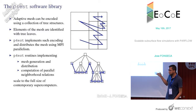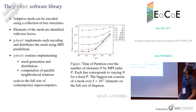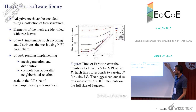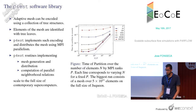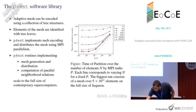The P4est routines that implement mesh generation, distribution, and parallel neighborhood computation are known to scale to full contemporary supercomputers. As an example, this plot is from the partition routine run at the supercomputer center in Jülich. In the largest example, it was able to create and distribute a mesh of over 500 billion elements using the full machine, with runtimes below one second for the partition operation. We have similar results for the ghost layer computation.